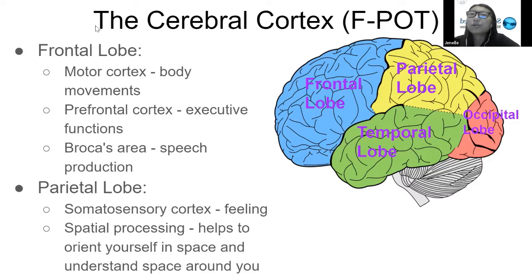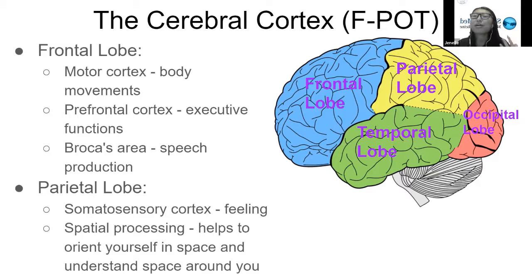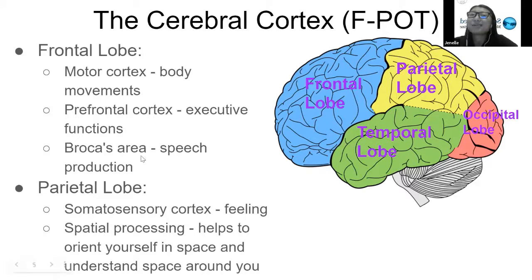The frontal lobe is composed of the motor cortex, which is responsible for body movements. The prefrontal cortex is responsible for executive functions — things like thinking, problem solving, supervising and directing interactions with other parts of the brain. Broca's area is also within the frontal lobe, and it's responsible for speech production. Definitely something to keep in mind.